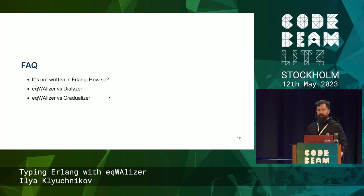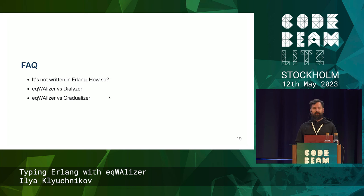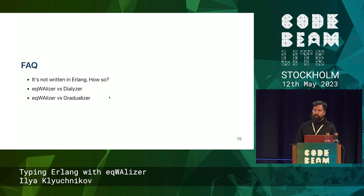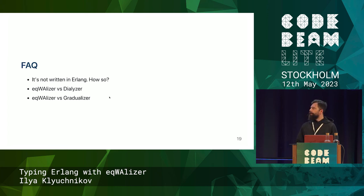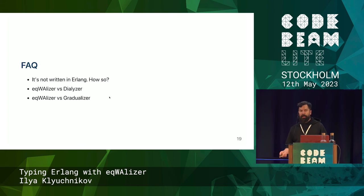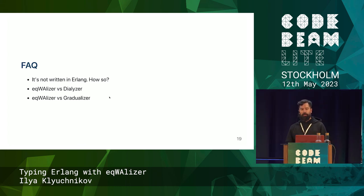These are the questions we get almost every time we talk about Eqwalizer. The first question is always: it's not written in Erlang — why not? Practically, when we understood the limitations of Erlang, frankly speaking, Erlang would not be a good choice for writing things like a type checker or something like Rust Analyzer. So we chose it from a practical point of view. If we had written it in Erlang, it would have taken much more time and probably would be much slower than what we have now.